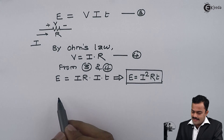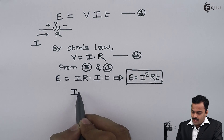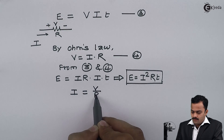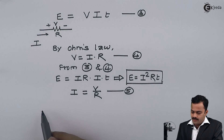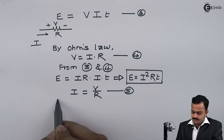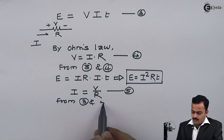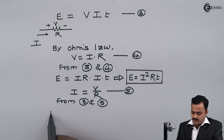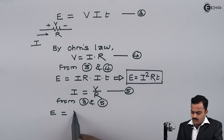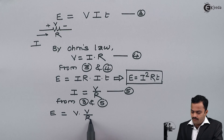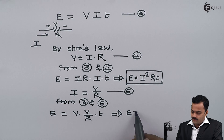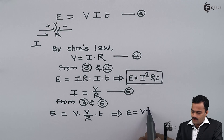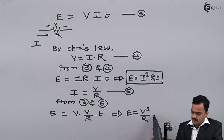Again by Ohm's Law I can express I as V by R. I will consider this as equation number five. Using equations three and five I can write electric energy E equals V multiplied by V by R, multiplied by T. This gives one more expression: E equals V² by R into T.